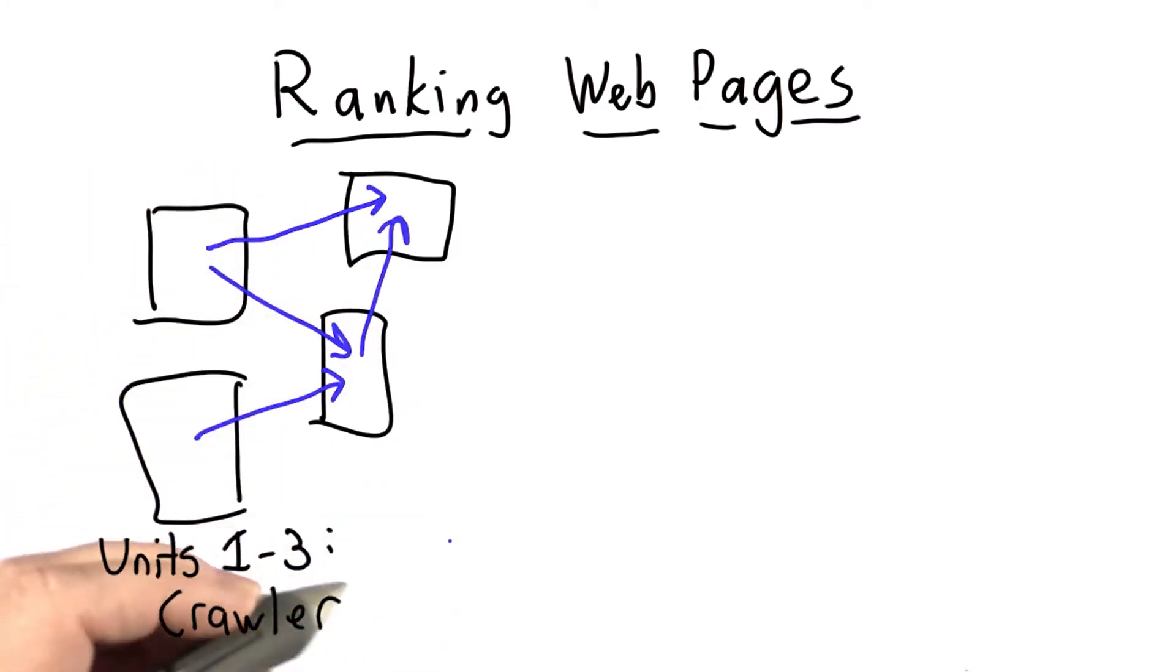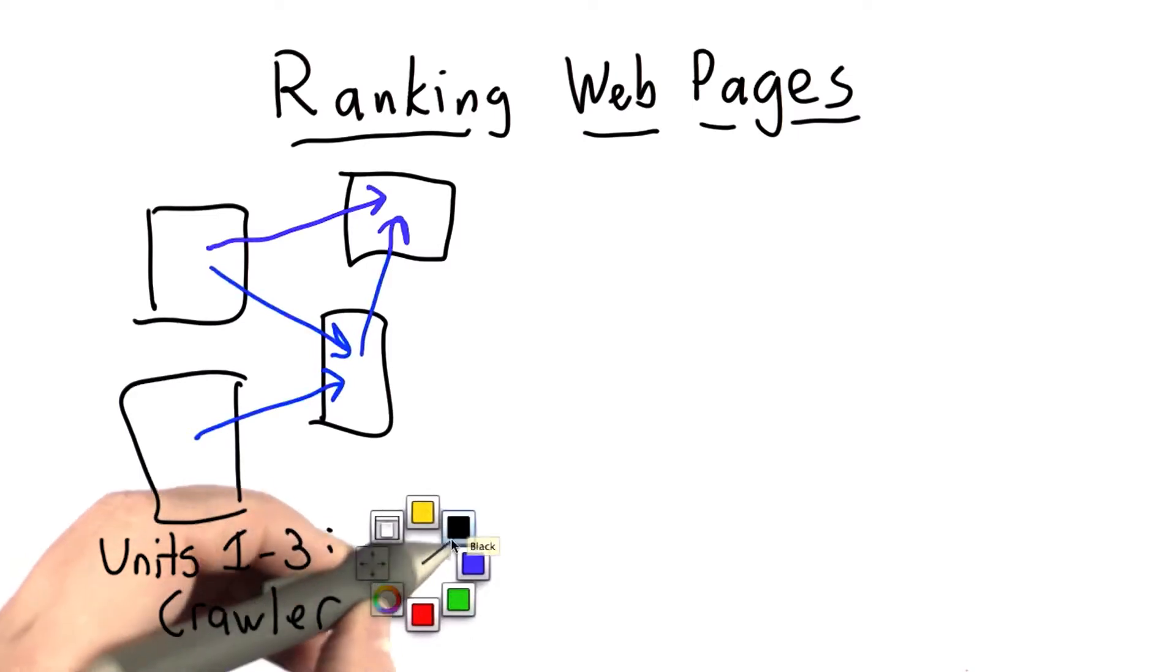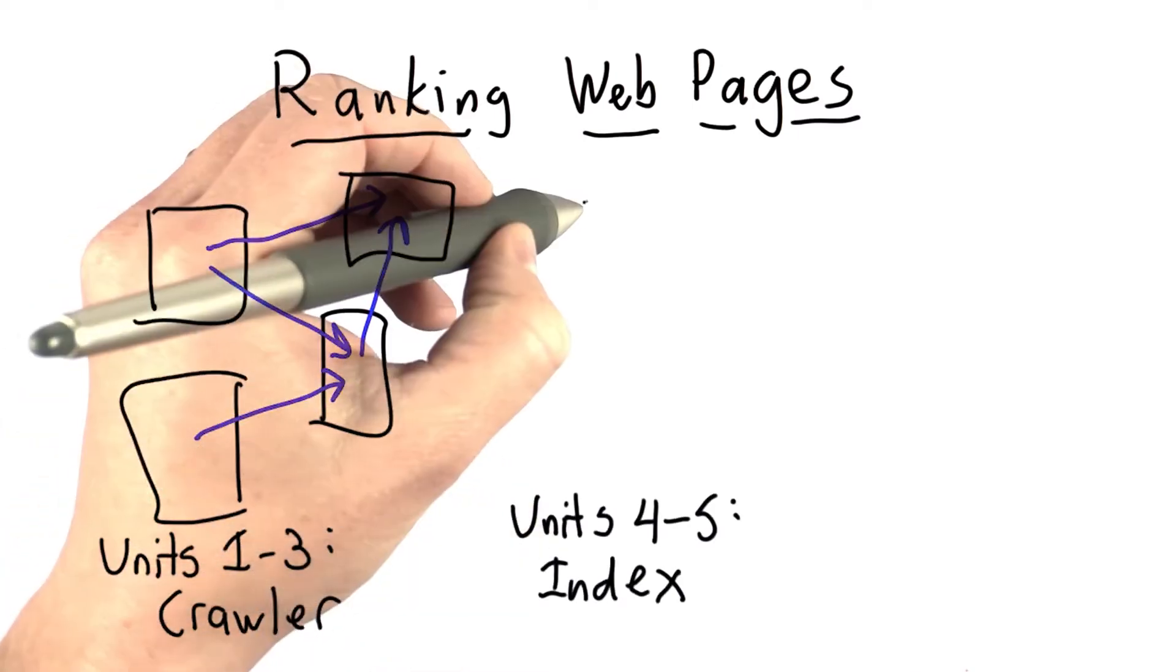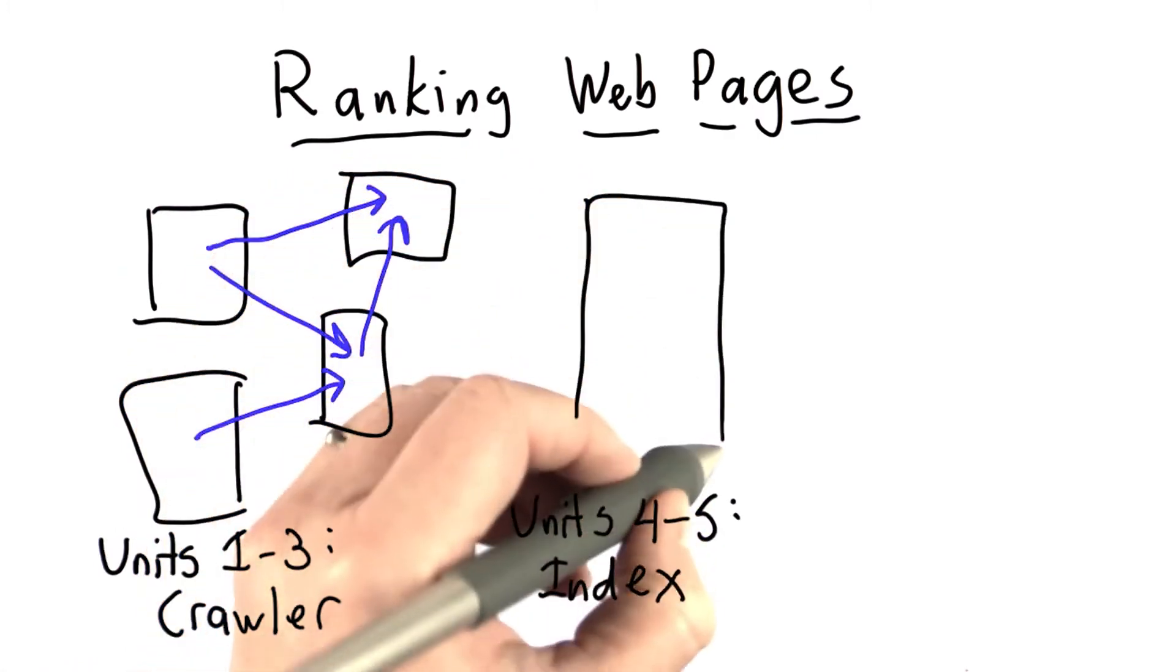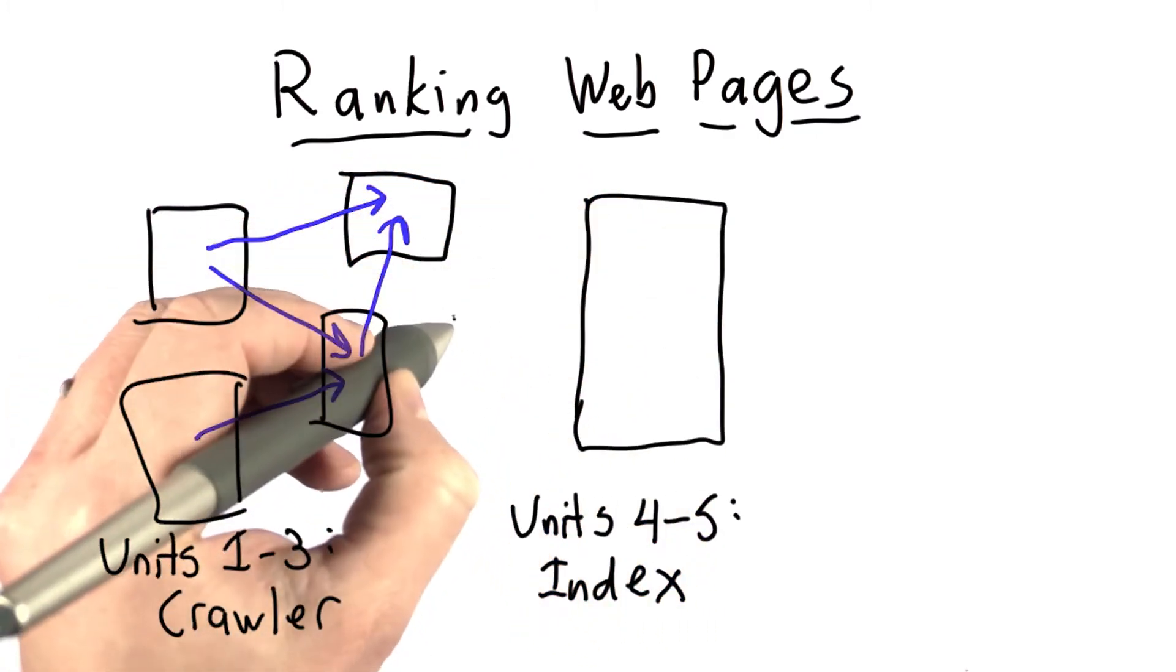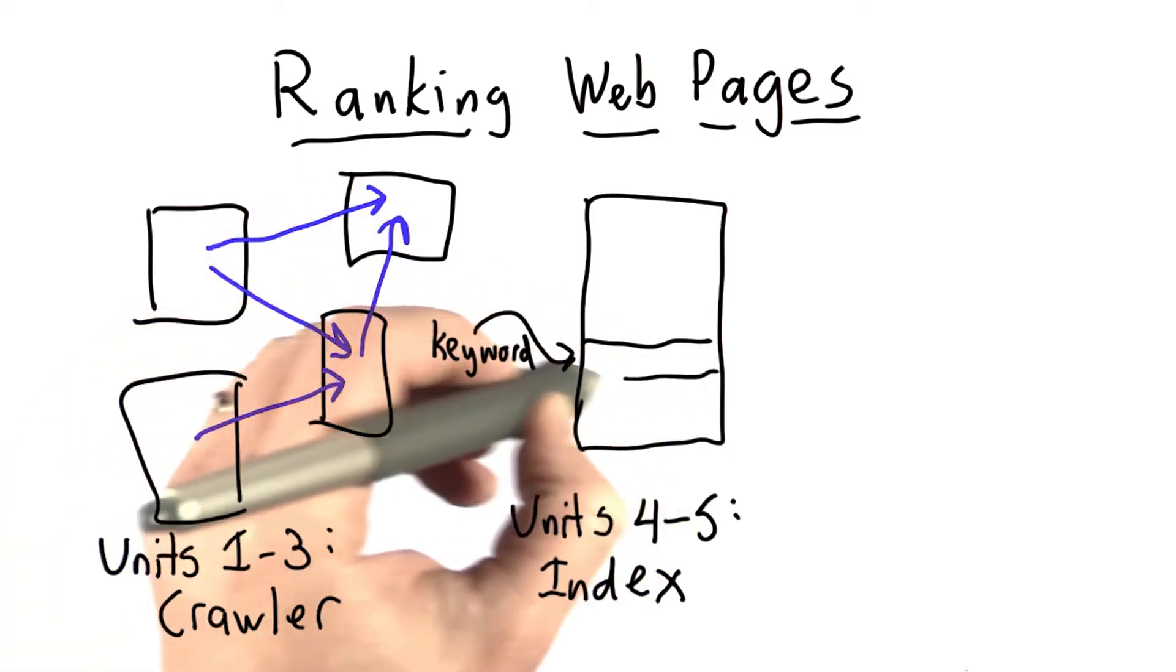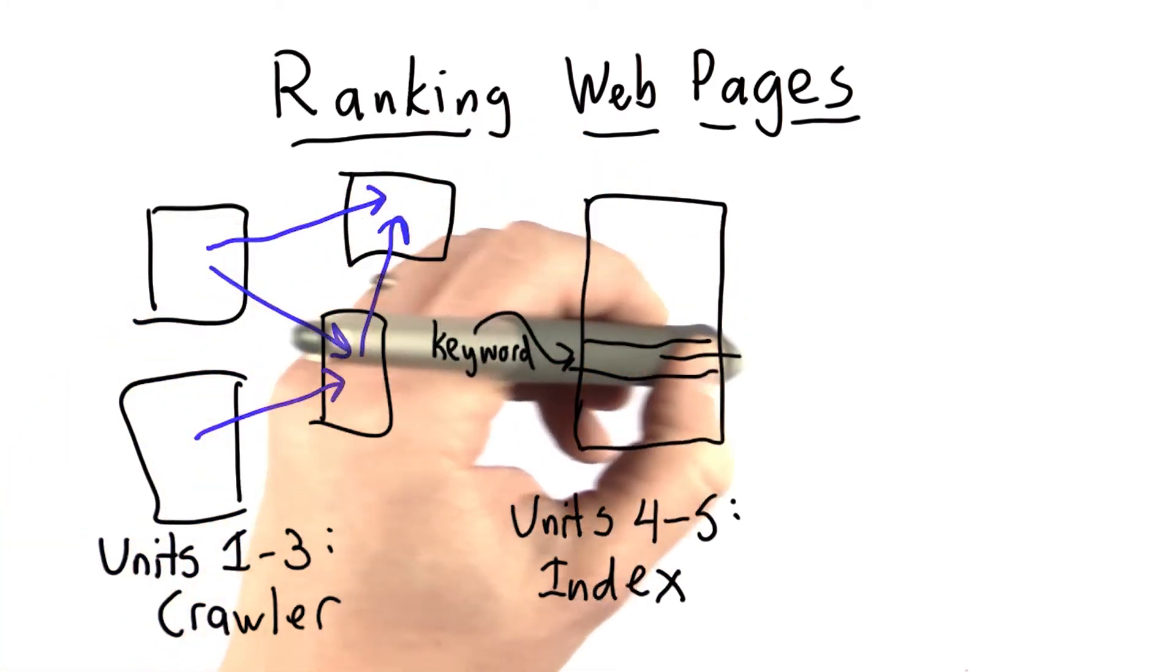And the end result of the crawler, after units 4 and 5, was we had an index. By the end of unit 5, it was a hash table where we could look up a keyword, and we would find the entry where that keyword might appear.